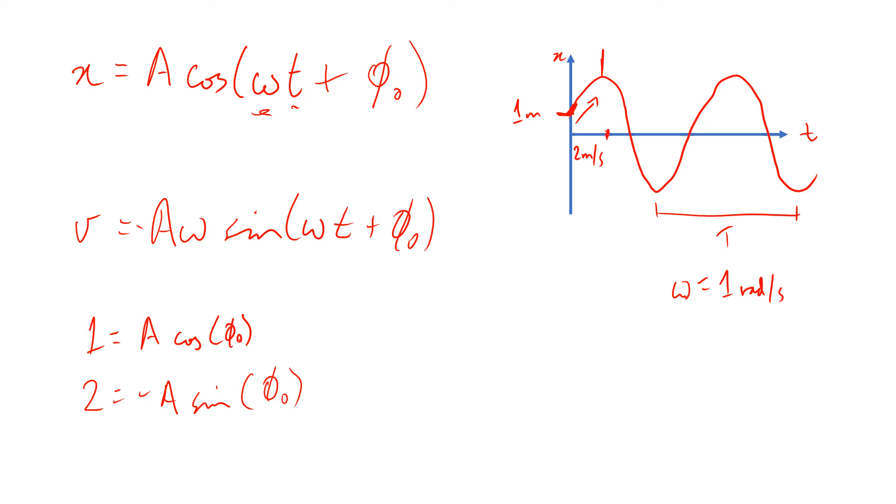And now I can say, well there's a few ways to go about this, but we know sine over cos is tan, so we could just divide one by the other and say divide this by this, and we get two equals, well the A's are going to cancel, negative tan phi nought. Phi nought equals inverse tan, or perhaps arctan, of negative two. I'll just throw that into my calculator and we see that equals minus 1.1, we'll call it 1.1 rad.